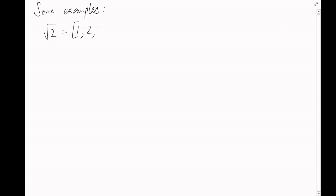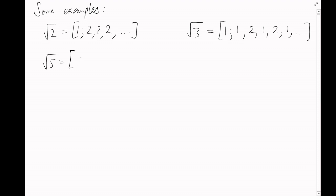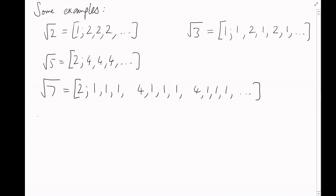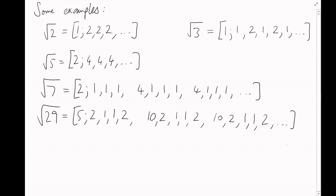But we can say more. Running the continued fraction algorithm for √d for several positive integers d, we get: √2 = [1; 2, 2, 2, 2, ...], √3 = [1; 1, 2, 1, 2, 1, 2, ...], √7 = [2; 2, 1, 1, 1, 1, 4, 1, 1, 1, 4, ...], and √29 = [5; 2, 1, 1, 1, 2, 10, 2, 1, 1, 2, 10, ...].